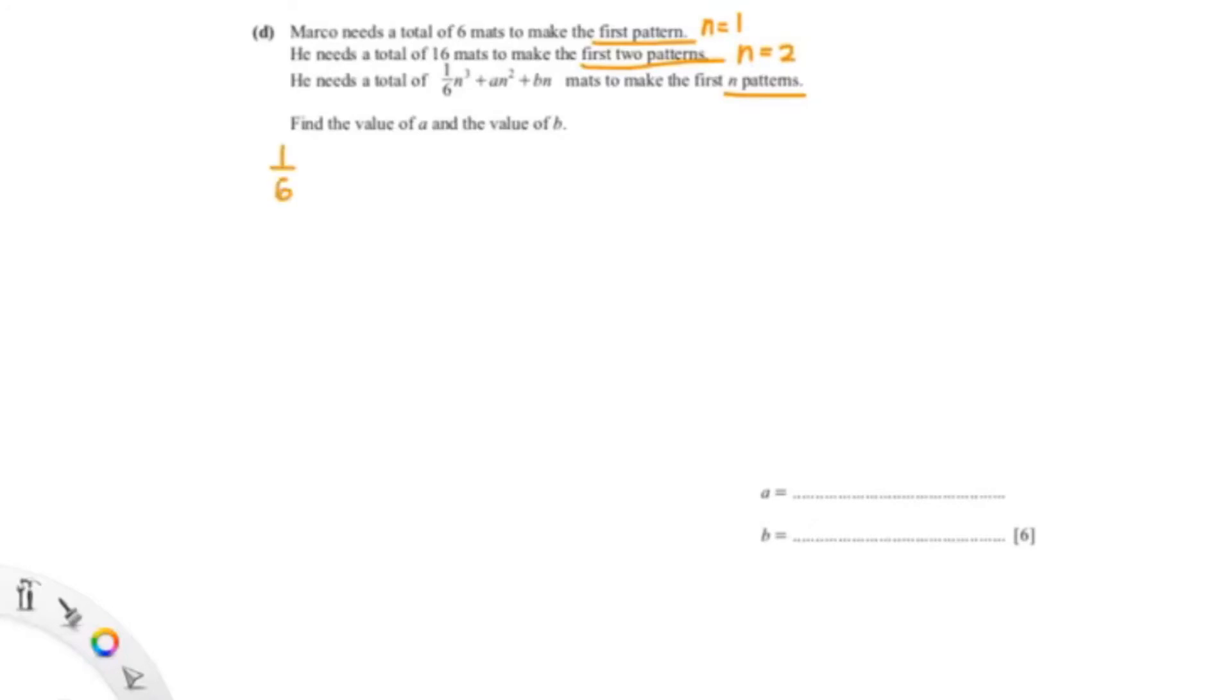So now we can just sub our n into the formula given. So 1/6 times 1 cubed plus a times 1 squared plus b times 1, giving us 6. And for the second one is 1/6 times 2 cubed plus a times 2 squared plus b times 2, giving us 16.